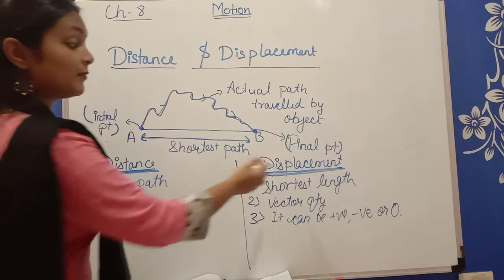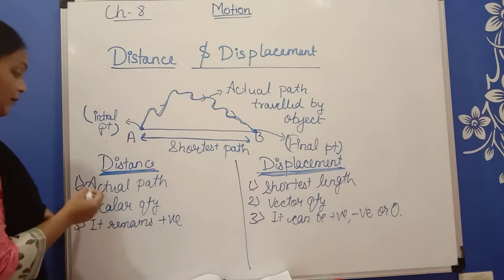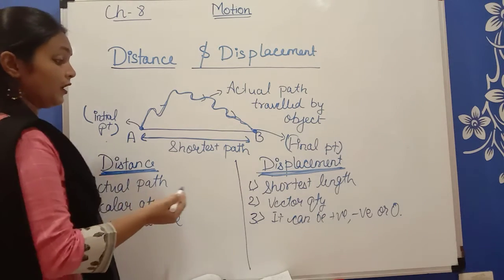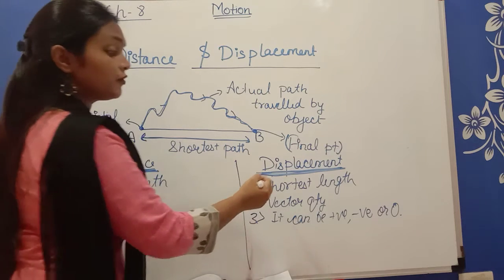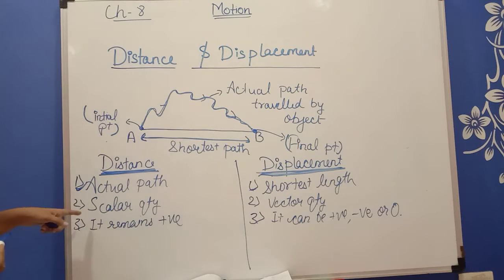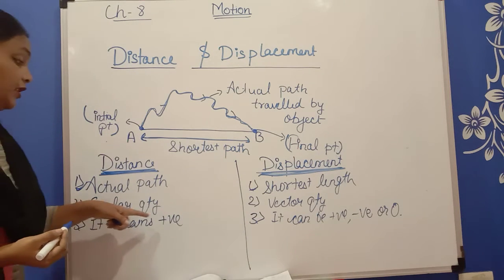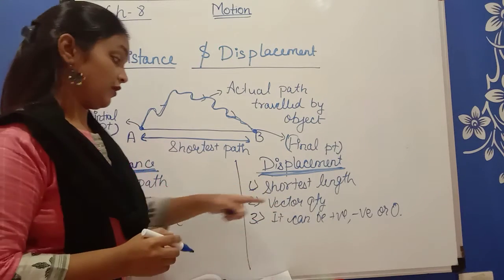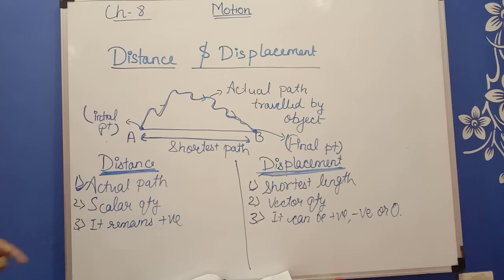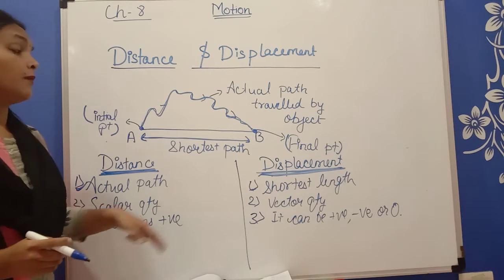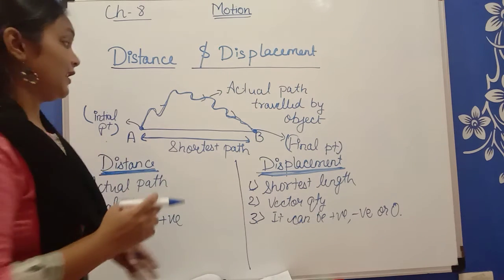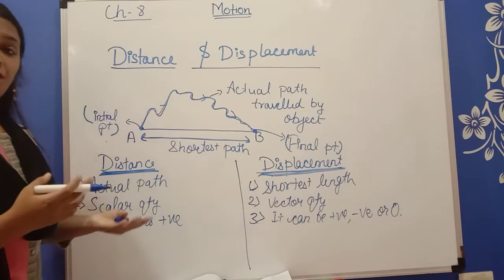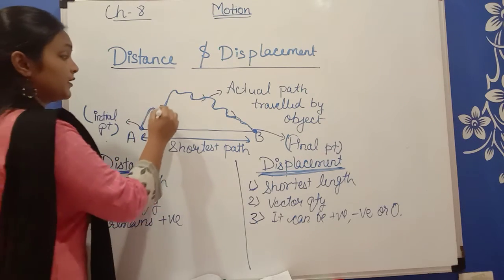We have two differences between distance and displacement. First, we call the actual path the distance, and the displacement is the shortest length. Now, what about scalar quantity? Distance is the scalar quantity and displacement is the vector quantity. Distance always remains positive because when we cover distance, we are always completing some distance.